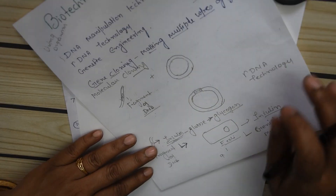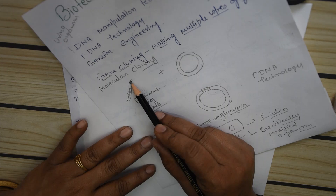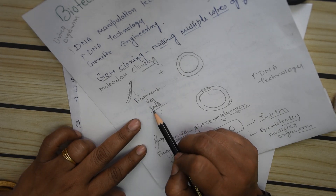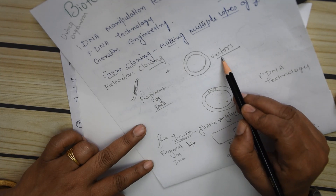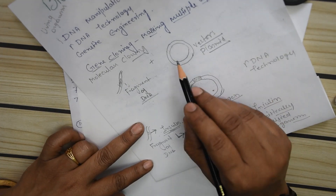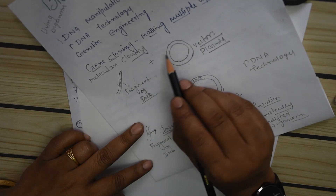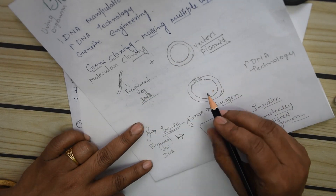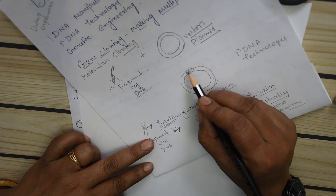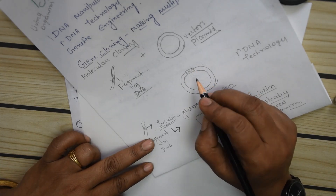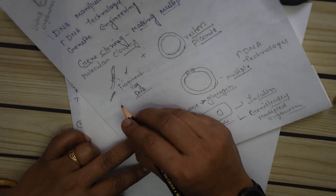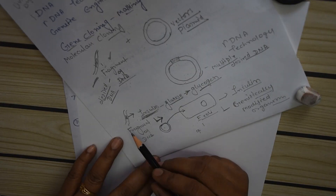Let's understand with one more example. This is a fragment of DNA and we want to make multiple copies of this particular fragment. For that it has to be linked with a vector, and here the vector is a plasmid. Using the restriction enzyme, we cut the vector genome and at that point the fragment of DNA is linked. So when this plasmid replicates, along with the plasmid this particular fragment of DNA also gets replicated, and we get multiple copies of this particular DNA. This is gene cloning.